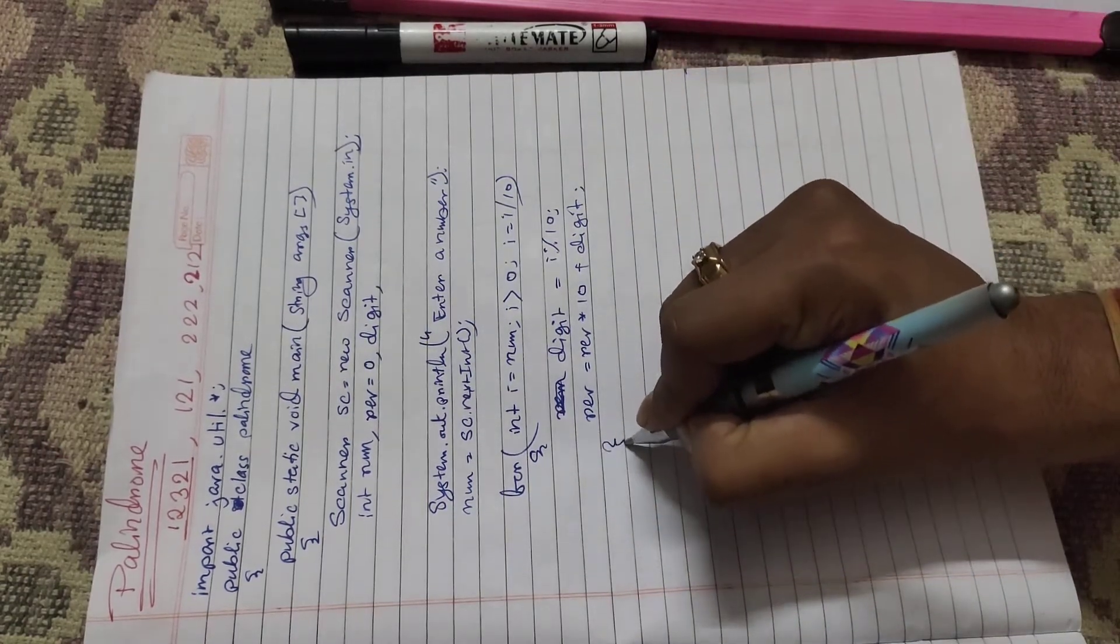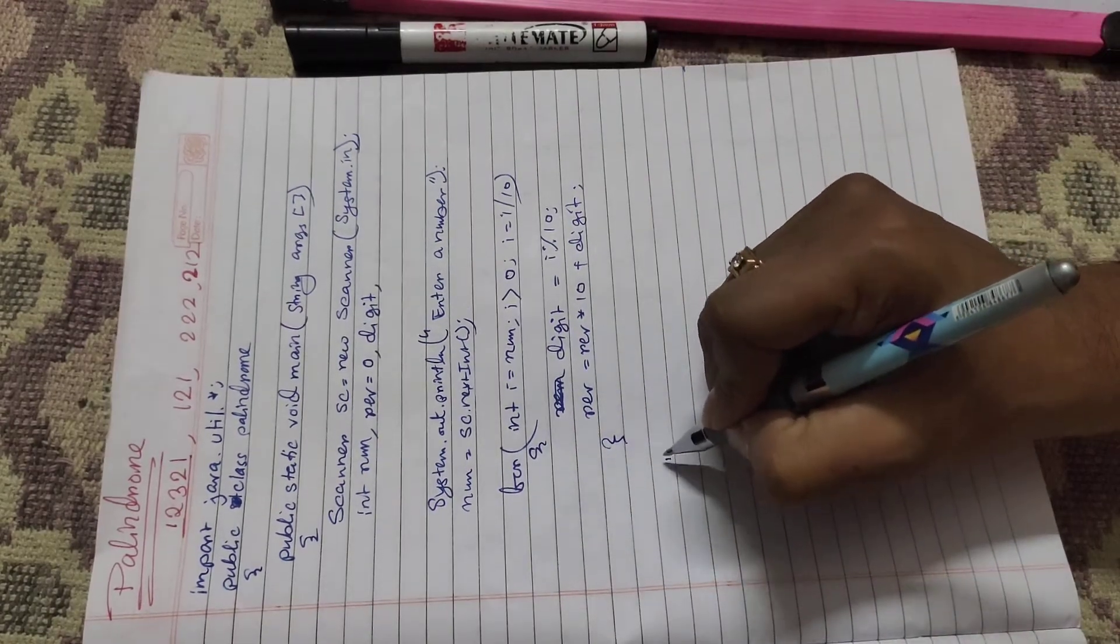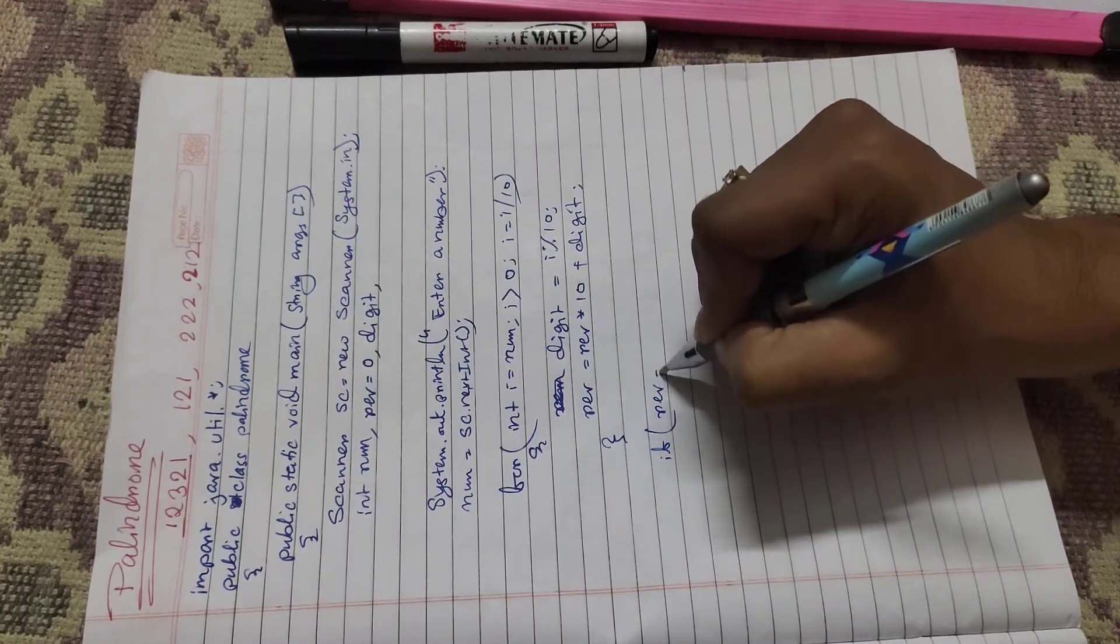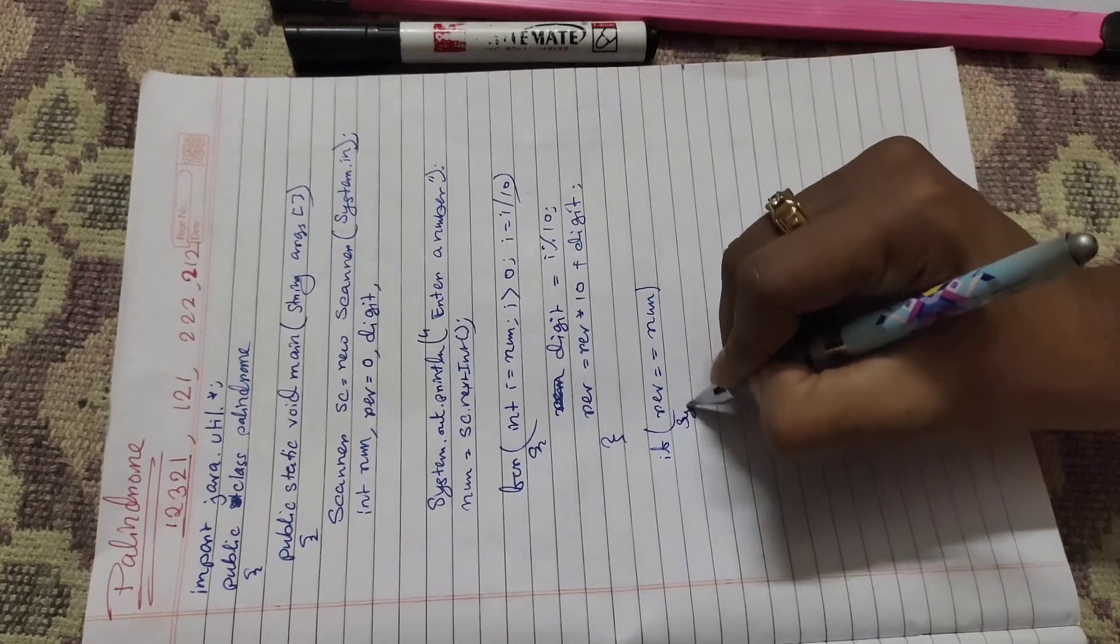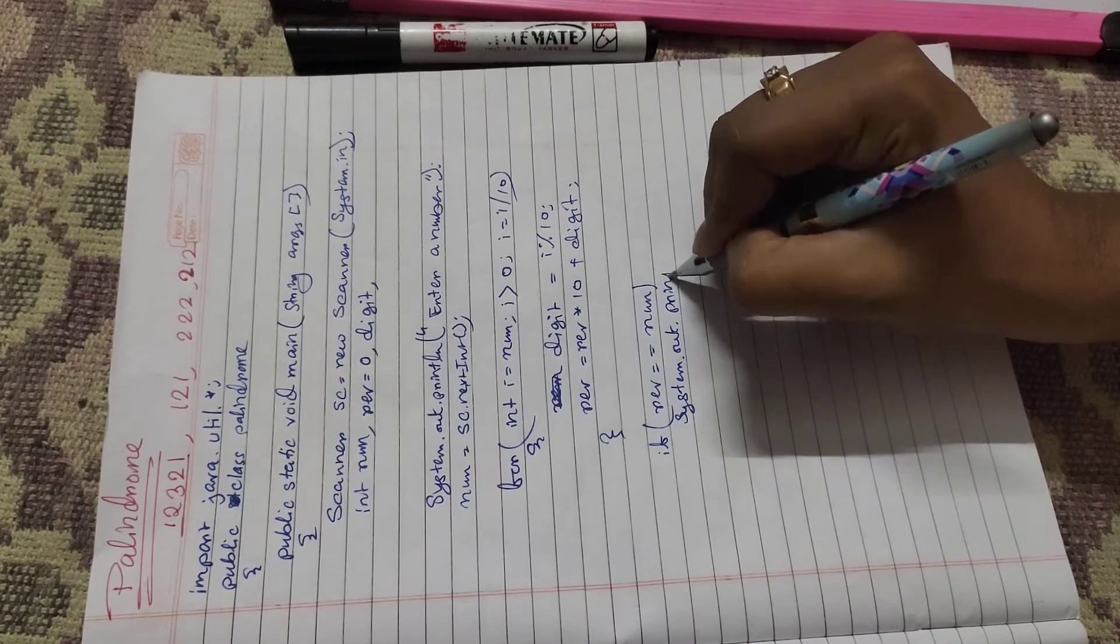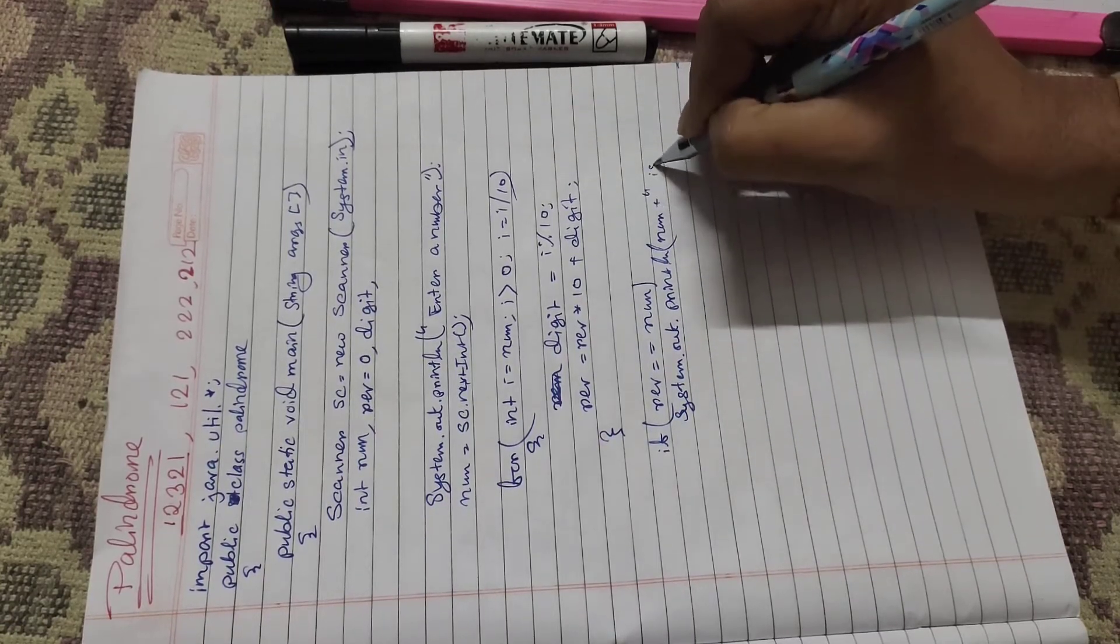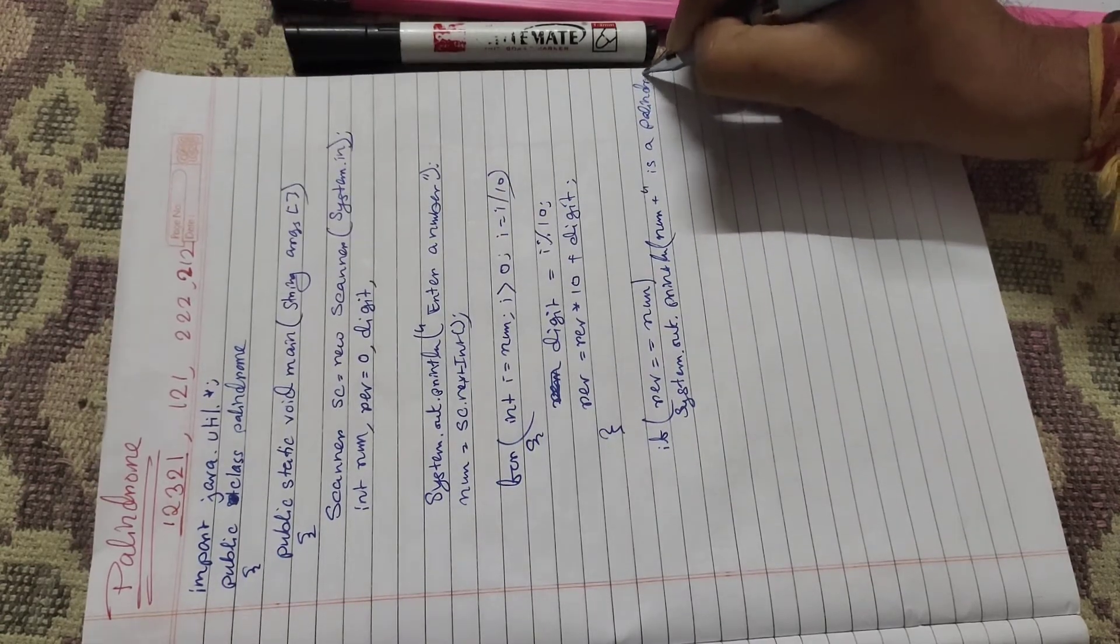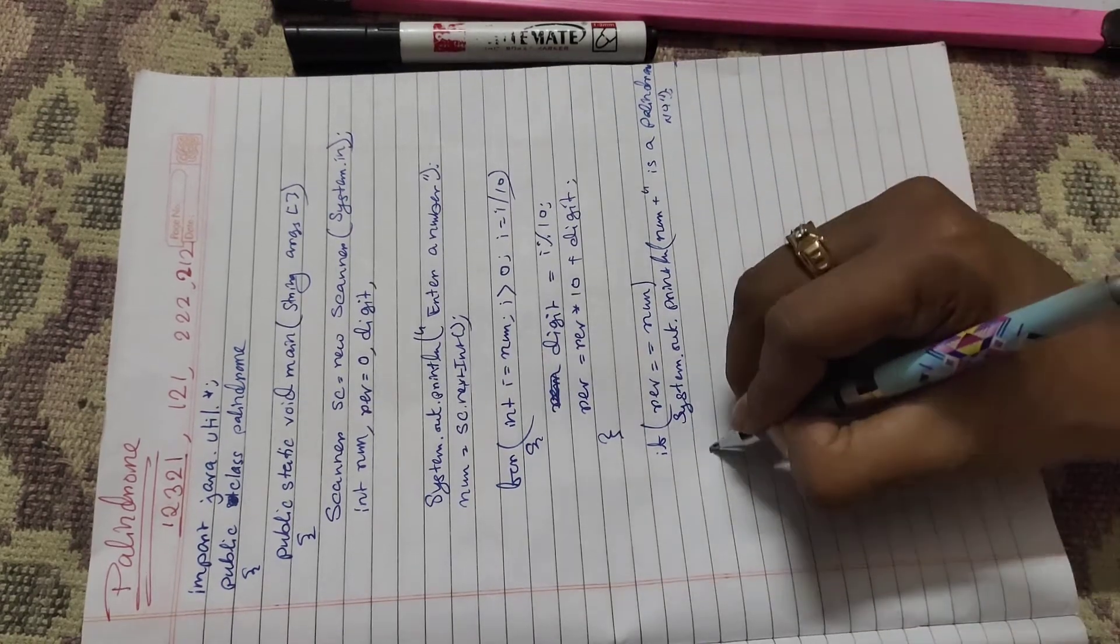Then if rev double equals num, you can write System.out.println num "is a palindrome number".